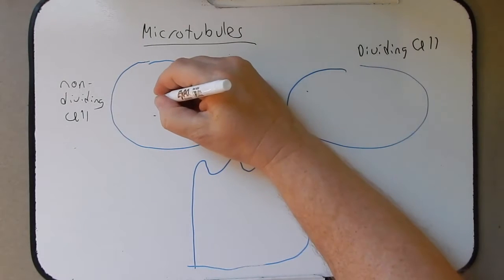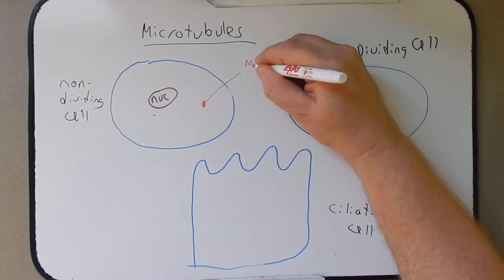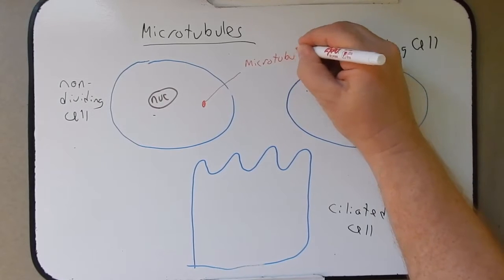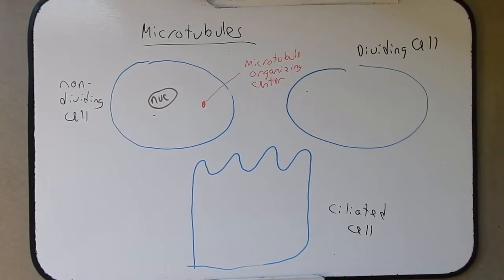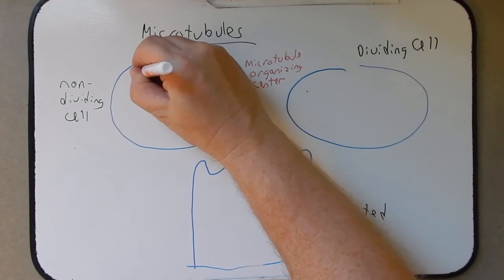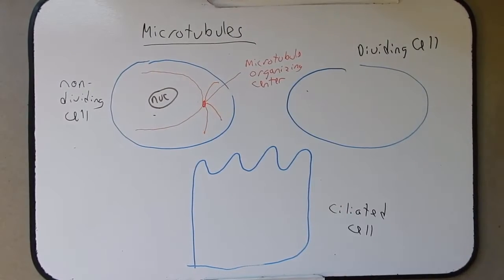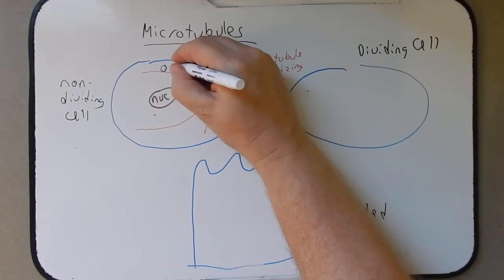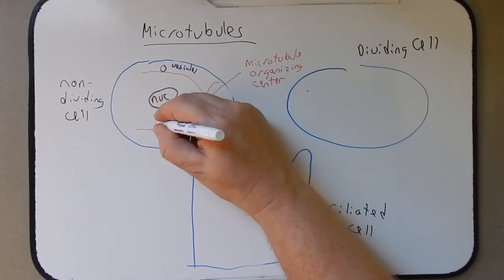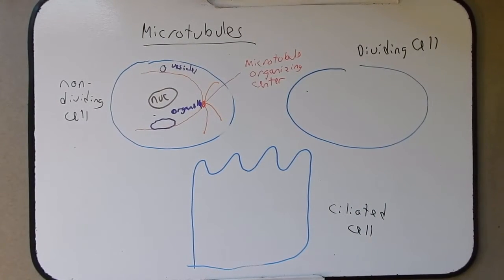Let's draw the nucleus in the non-dividing cell, and then the structure here — we'll come back to it later — but it's going to be a microtubule organizing center. As the name implies, this is where microtubules will extend from. As they extend from here, they may have vesicles attached to them, or organelles like a mitochondria. They're important in moving these vesicles and organelles around in the cell, and also for maintaining their relative positions.